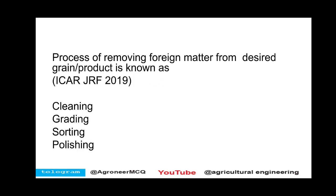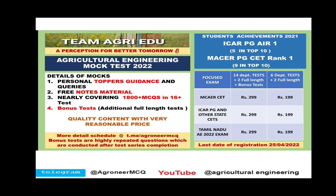In the ICAR-JRF 2019 examination, they asked: 'The process of removing foreign matter from a desired grain product is known as?' The answer is cleaning. The classification of fruits or grains considering a number of physical properties is known as grading. And sorting is classification based only on a single property.